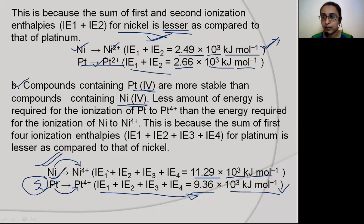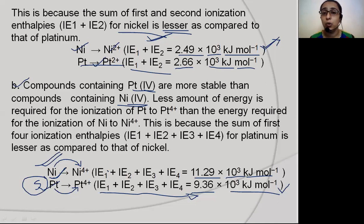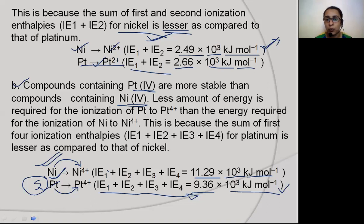So the rule is: whichever element requires less total ionization energy to achieve a particular oxidation state, compounds in that oxidation state will be more thermodynamically stable. Thermodynamic stability is calculated on the basis of the sum of ionization enthalpies required to attain that oxidation state.